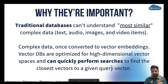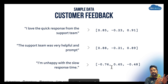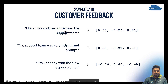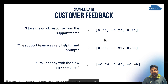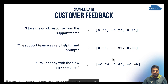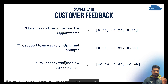Let's look at some simple examples of vector embeddings — the classic case of customer feedback. Here we have three feedback responses: one says 'I love the quick response' — positive; another says 'the support team was very helpful and prompt' — also positive; and a third says 'I'm unhappy with the slow response time' — negative. If you notice the vectors generated for these different customer responses, the two positive ones have similar numbers, but the negative one is quite different. On a glance, you can see the distinction because the two positives are similar and the negative stands apart.